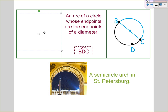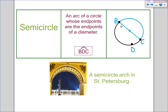Next, we have what we call a semicircle. A semicircle is an arc of a circle whose endpoints are the endpoints of a diameter — basically half of a circle. When we talk about a semicircle, we use three letters to name it. So from B to D to C gives me a semicircle, or half of a circle.